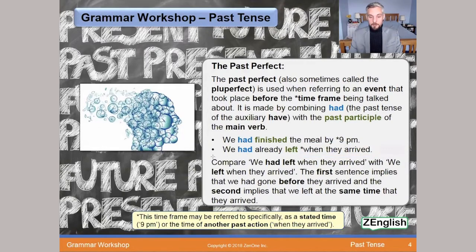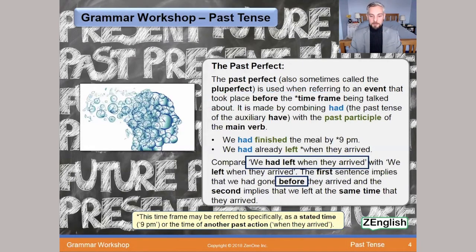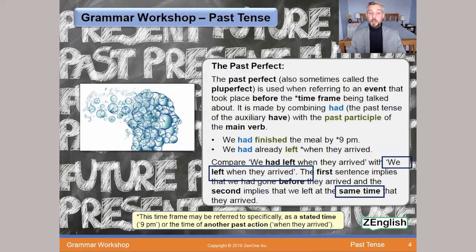Let's compare two sentences: 'We had left when they arrived' versus 'We left when they arrived.' The first implies we had gone before they arrived — the past perfect refers to an action before the stated timeframe. The second sentence means we left at the same time they arrived. Only by using the past perfect can we imply that something happened before the time we're talking about. It may sound complicated, but once you get used to it, you'll understand why we use it.